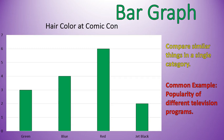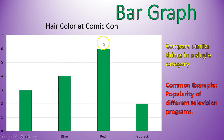Now, in this example of a bar graph, a question I could ask would be: how many people at Comic-Con had red hair? Six people had red hair. How many people had jet black hair? Two people had that. Another common example would be: how many more people had red hair than blue hair? There are two more people with red hair than blue hair — a difference of two. You could subtract six minus four, or just use the graph to look at the increase.